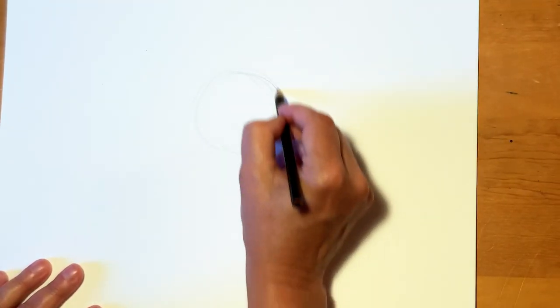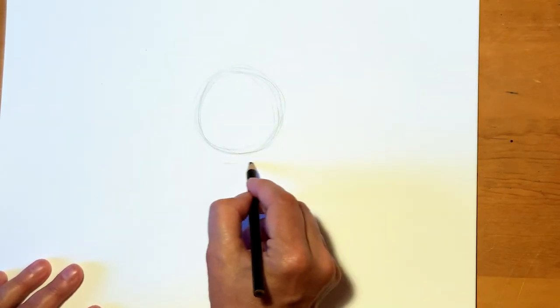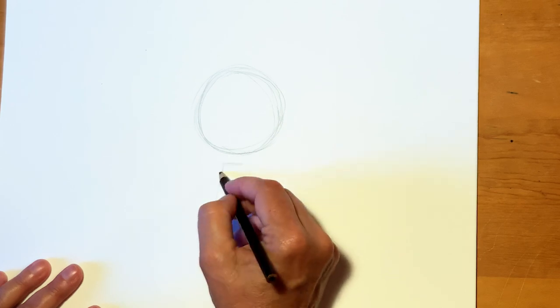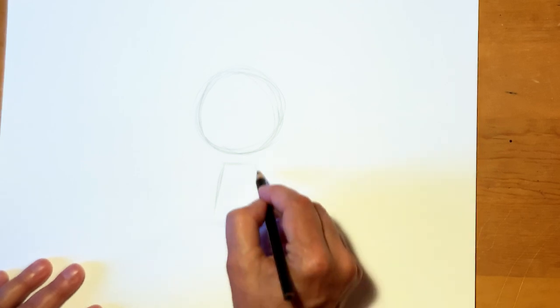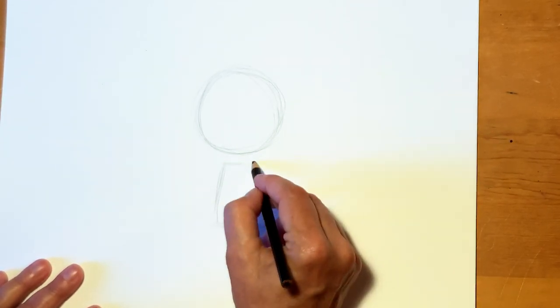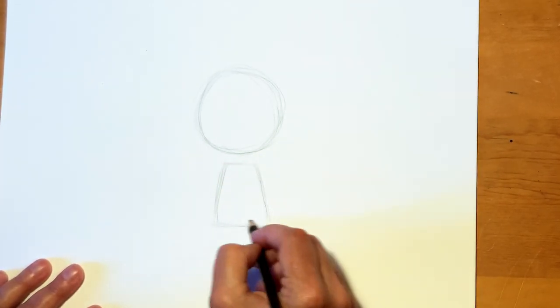So I'm going to lightly draw a circle where his head would go, and then I'm going to do a rectangle shape, but almost a square, that's going to be his body. It's a rectangle, but it's narrower on the top.